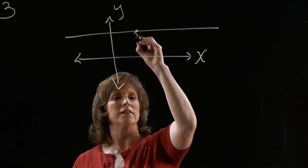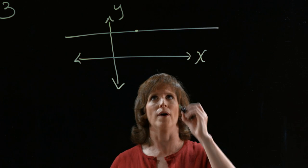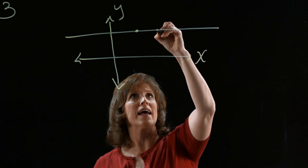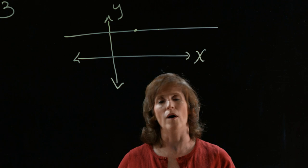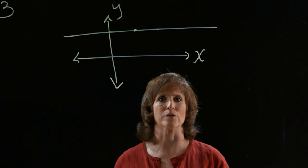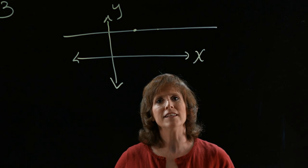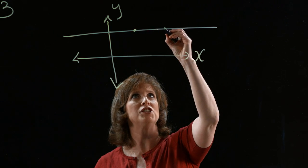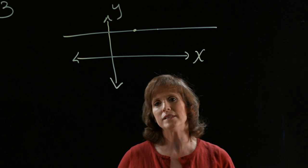If I start at any point on the line and I want to get to another point, vertically, I don't move at all. Horizontally, I can move any distance that I want. One, two, three, I can even move backwards. When you calculate the slope of this line, the change in the vertical motion is zero, and the change in the horizontal motion will be some fixed number.